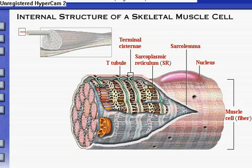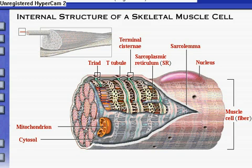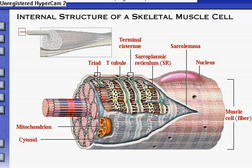T-tubules are invaginations of the sarcolemma projecting deep into the muscle cell's interior. Note the visible T-tubule openings on the surface of the sarcolemma. A triad is a three-unit group consisting of one T-tubule lying between two adjacent terminal cisternae. The cytosol is the intracellular fluid in which the organelles are suspended. Mitochondria are cytoplasmic organelles that are sites of ATP synthesis; they are referred to as the powerhouses of the cell. A myofibril is a cylindrical bundle of contractile filaments within the skeletal muscle cell.